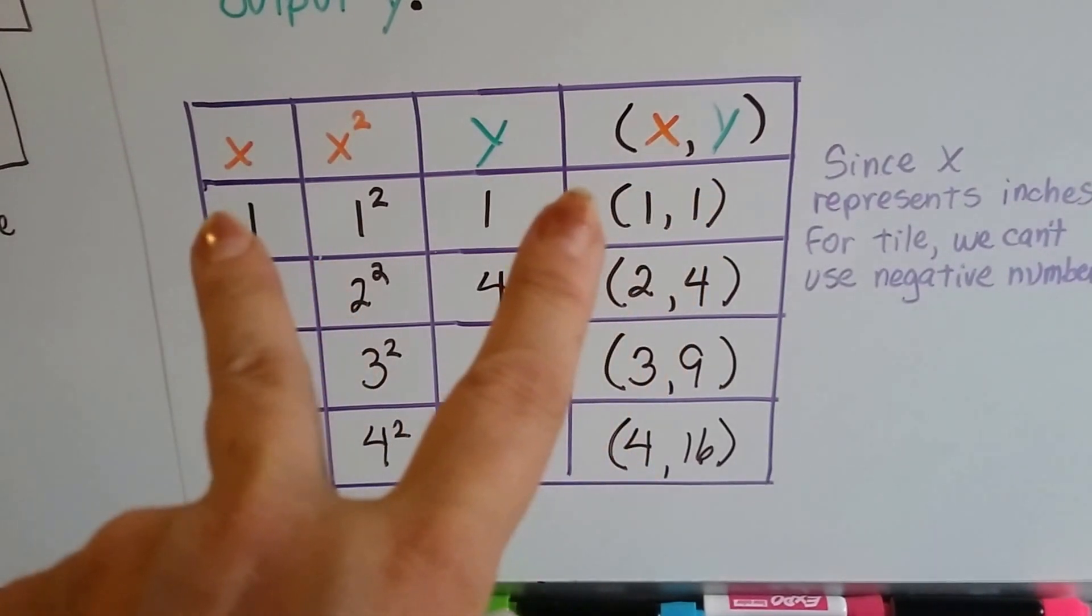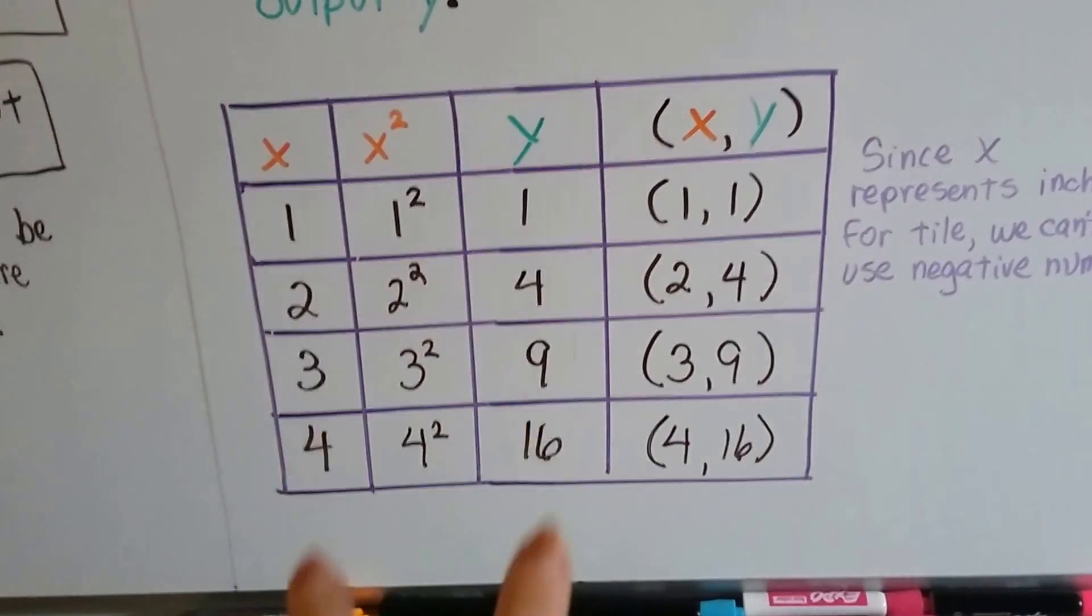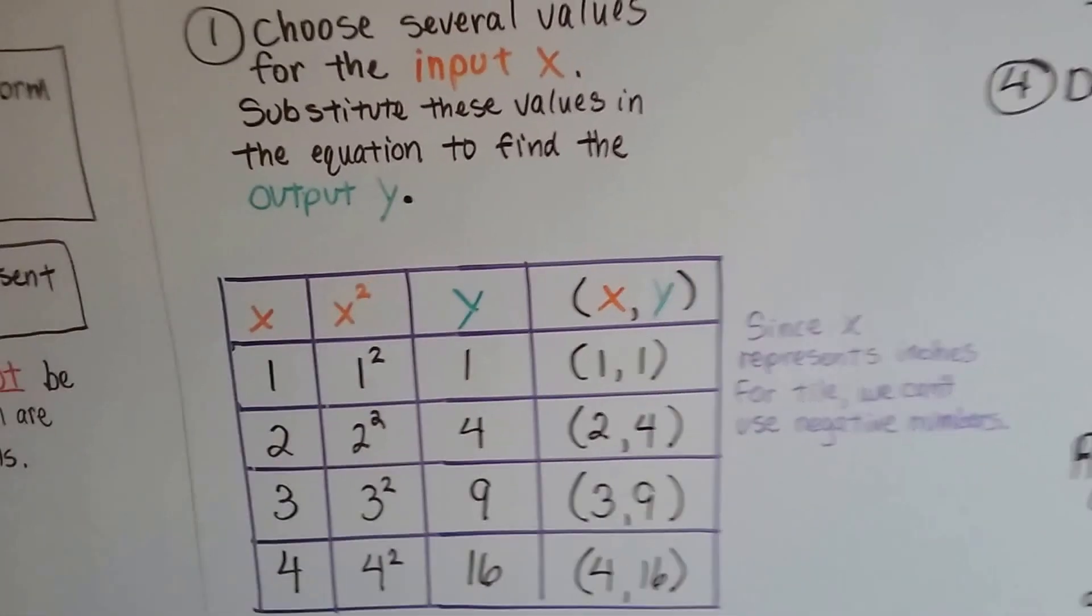That gives us our ordered pairs. One, one, two, four, three, nine, four, sixteen. Now we have our ordered pairs. Now we can graph them.